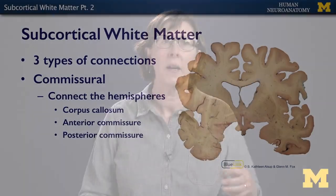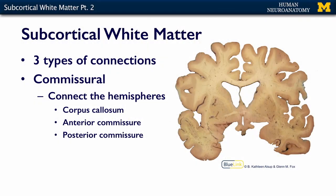The subcortical white matter is the white matter — the myelinated axons — that connects all of the gray matter within our brain. There are three main types of connections in the subcortical white matter.